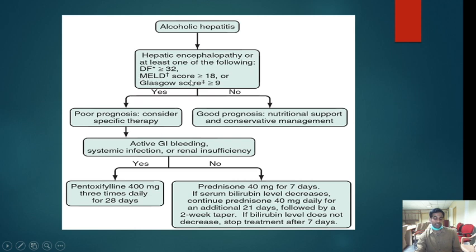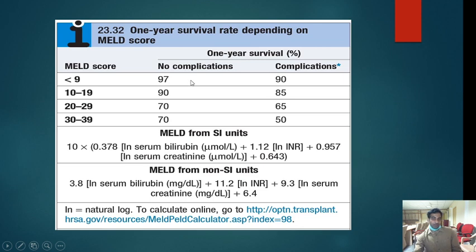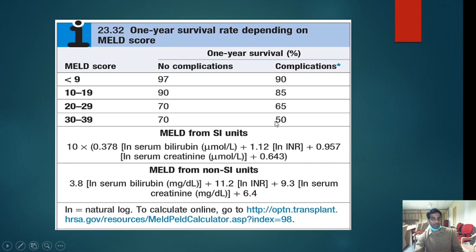There is also a MELD score — Model for End-Stage Liver Disease. If MELD score is less than 9, no complications in 97% of patients and survival is better. If MELD is 10 to 19, no complications in 90%. If MELD is 30 to 39, complications occur in 50% of patients.